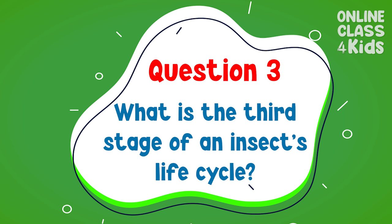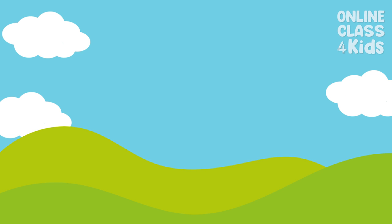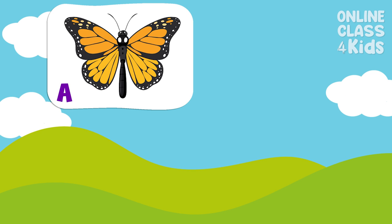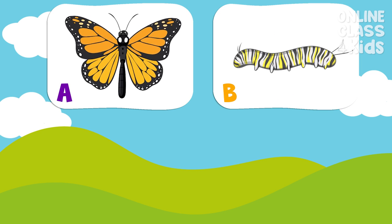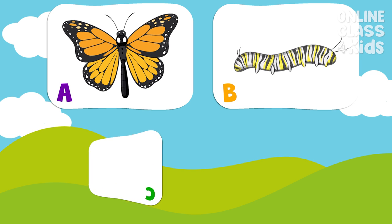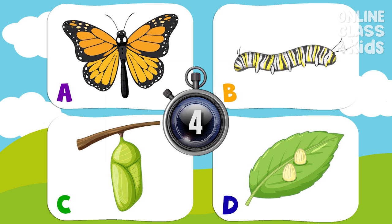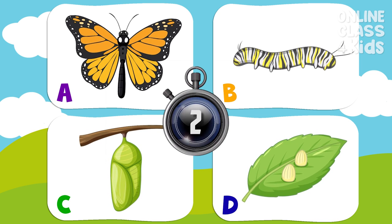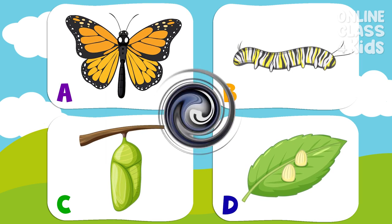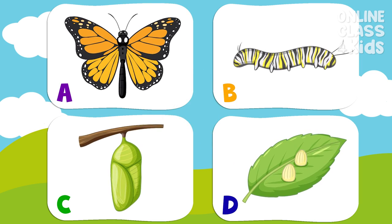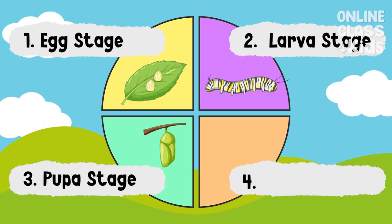What is the third stage of an insect's life cycle? Is it A, B, C, or D? Letter C. The third stage of an insect's life cycle is the pupa stage. Very good!